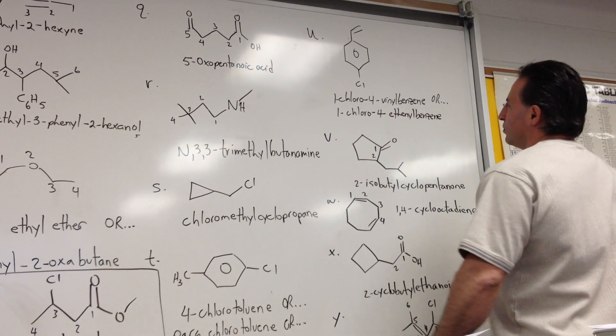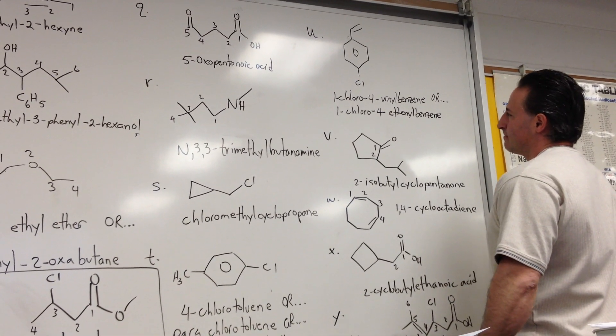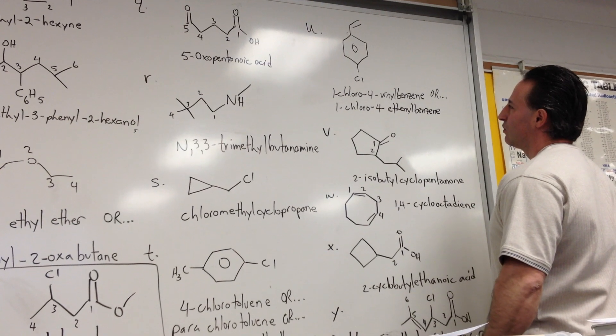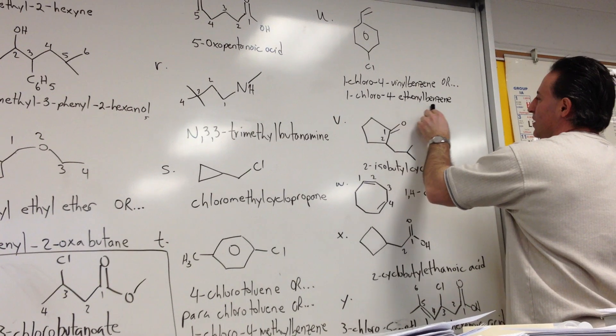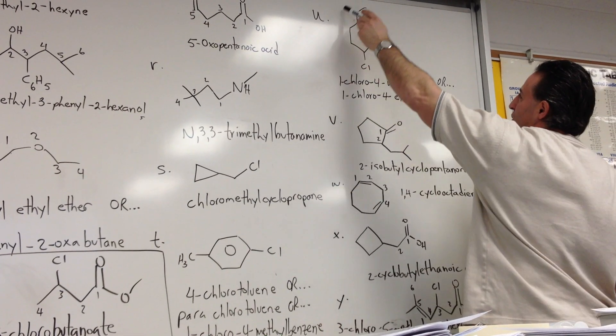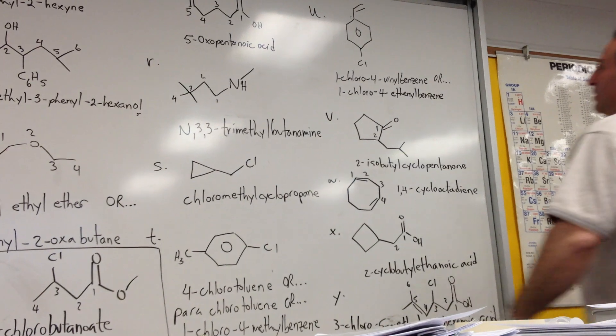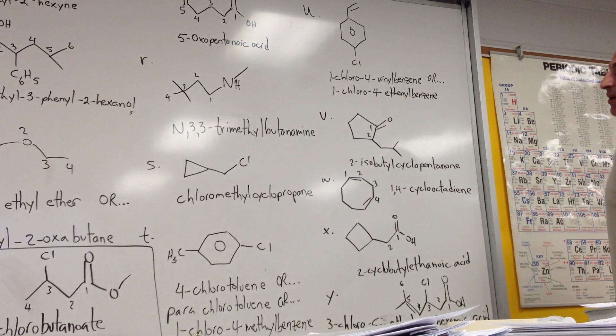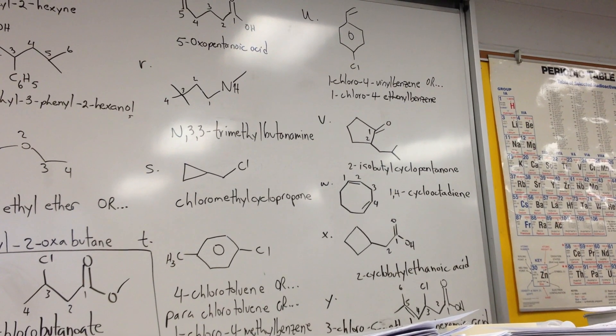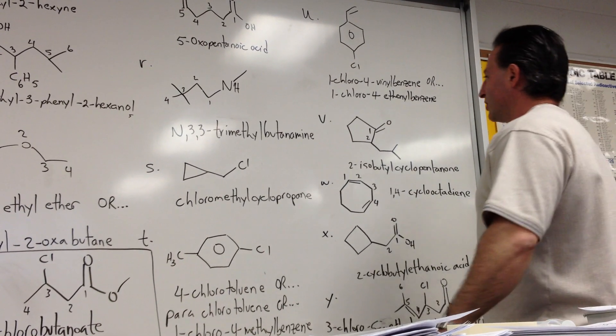In U, we have a vinyl group and a chlorine on a benzene ring, so we would call it 1-chloro-4-vinylbenzene, or you could also call it 1-chloro-4-ethenylbenzene. I don't know what the trivial name for vinylbenzene is, but if I did know it, I would use it, and I would call it parachloro-whatever the trivial name was. I'm sure it exists.